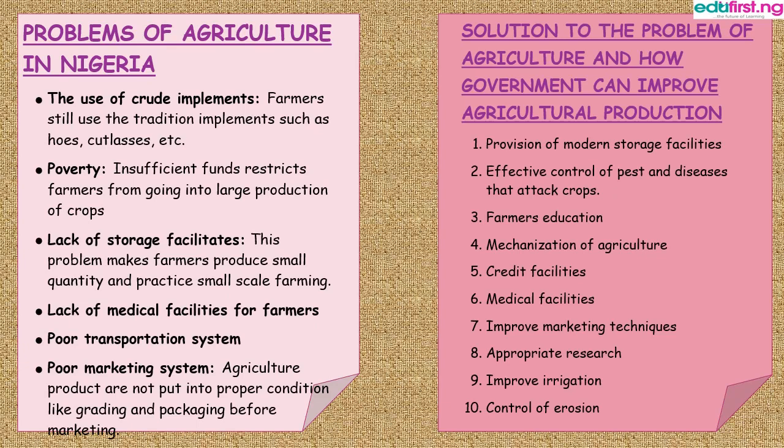Number three, the lack of storage facilities — this problem makes farmers produce small quantities and practice small-scale farming. Number four is the lack of medical facilities for farmers when they get ill. Number five is the poor transportation system — when farmers cannot conveniently convey their crops to where the market is, it becomes a problem. Number six is the poor marketing system.